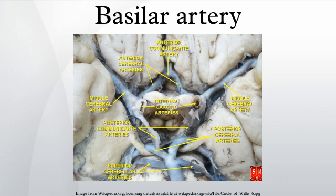The basilar artery arises from the confluence of the two vertebral arteries at the junction between the medulla oblongata and the pons, between the sixth cranial nerves. It ascends superiorly in the central gutter, ventral to the pons, and divides at the ponto-mesencephalic junction into the paired posterior cerebral arteries, close to the pituitary stalk.